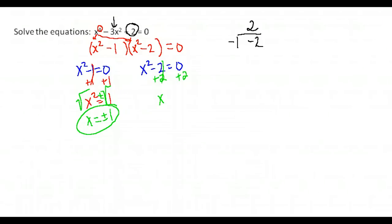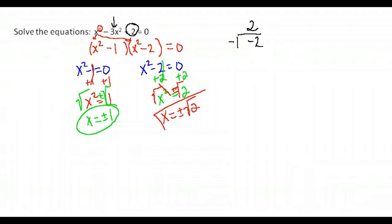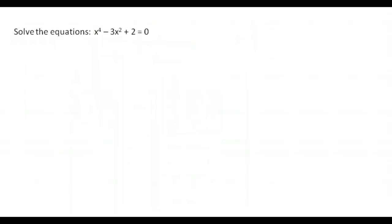For the second equation, add 2 to both sides to get x squared equals 2. Take the square root of both sides and always put plus or minus, so x equals plus or minus the square root of 2. This equation had four solutions total: 1, negative 1, root 2, and negative root 2. You would want to go back and check those to make sure they actually work.